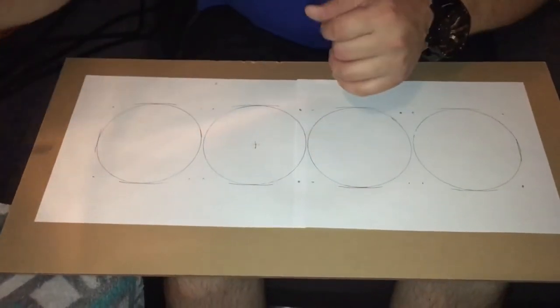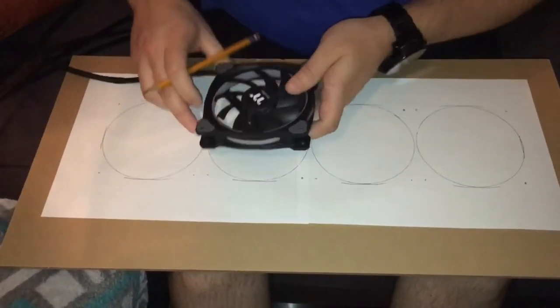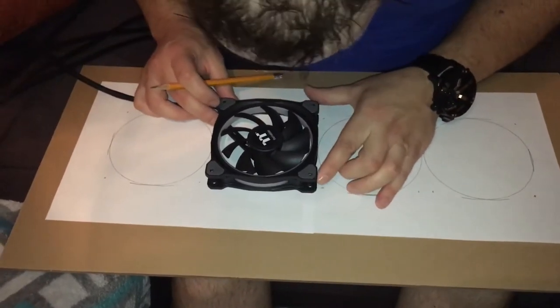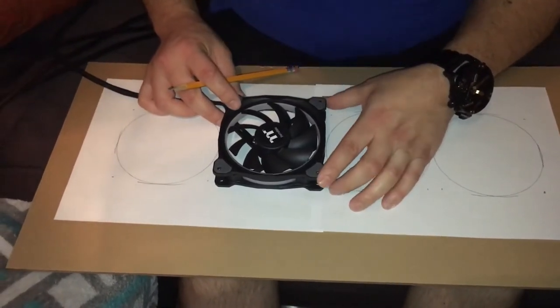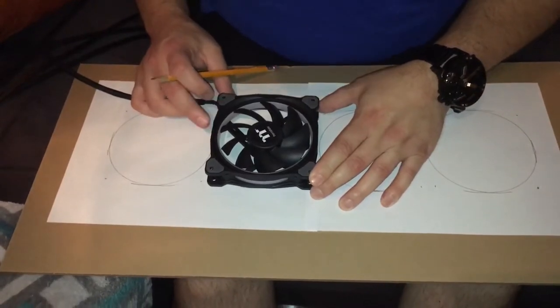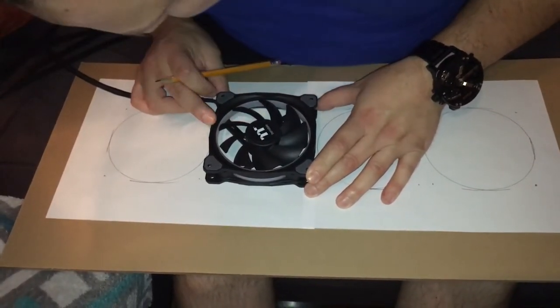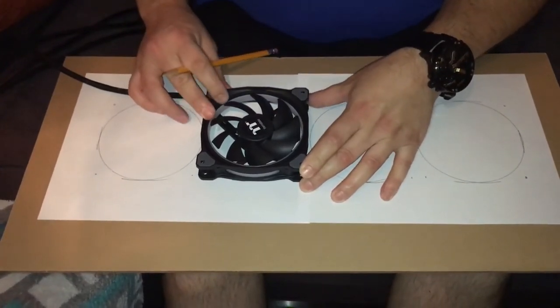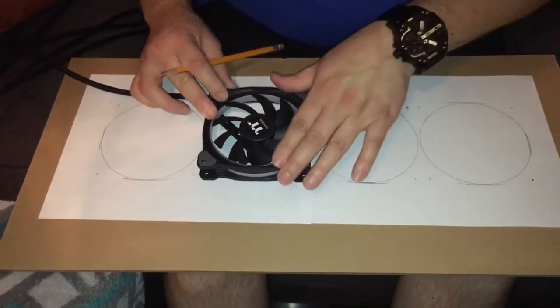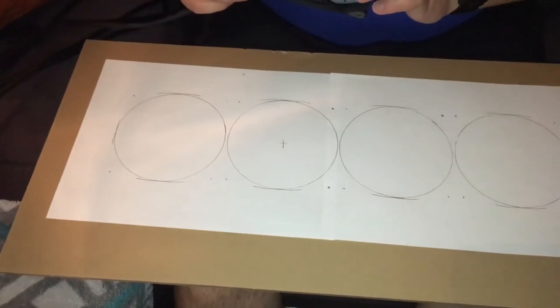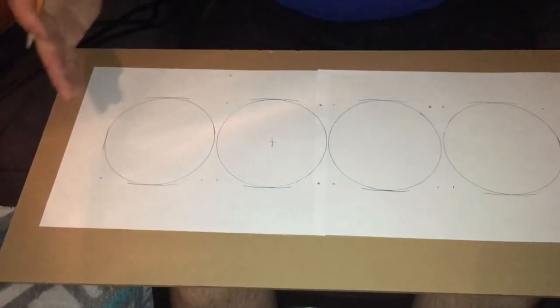Then I'll take one of my fans and just verify, because I can see my pen marks there for my holes. I make sure the fan is still exactly in line with where my circle is. We can see a little bit of gap on either side, which is exactly how my circle is.